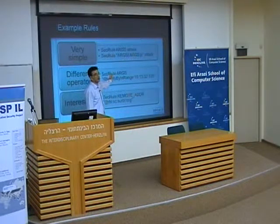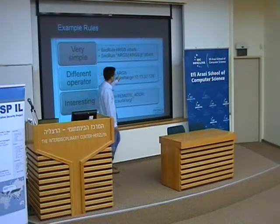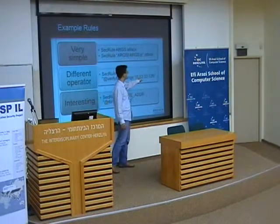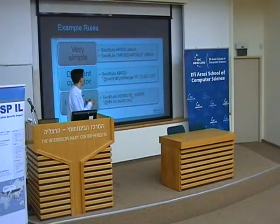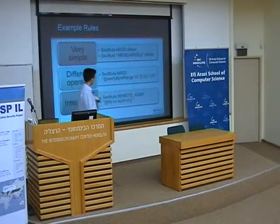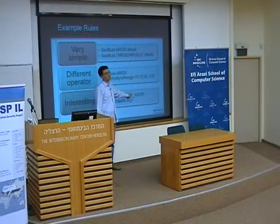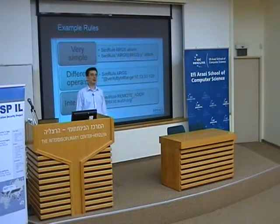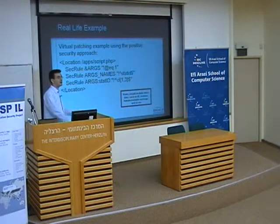This is simply applying a regular expression against your traffic, which is something we are all used to. However, we support more than regular expressions — we have what we call different operators. In the second example, instead of a regular expression, we take all the input parameters and make sure that only bytes 10, 30, and the range from 32 to 126 appear. Then in the third rule, we actually have a real-time blocking list — we take the remote address of the user, send it to the real-time blocking list, and ask whether we should allow this user to proceed or not.